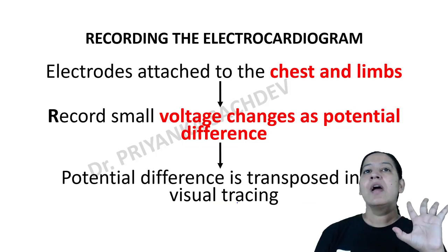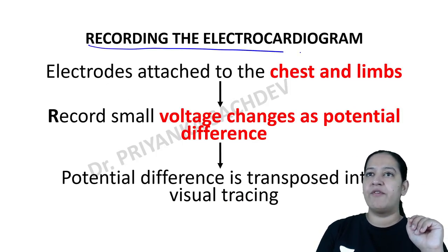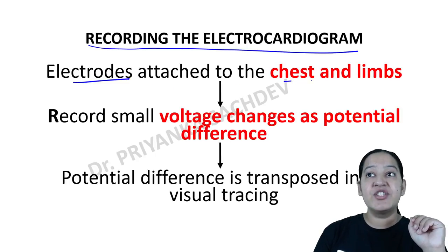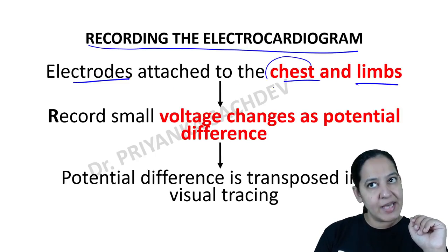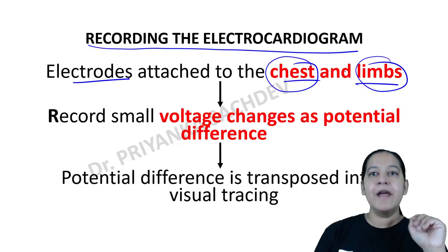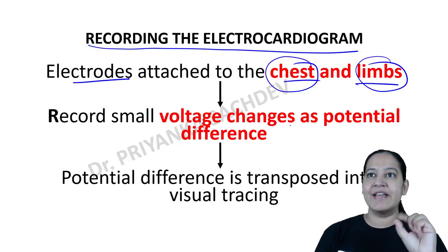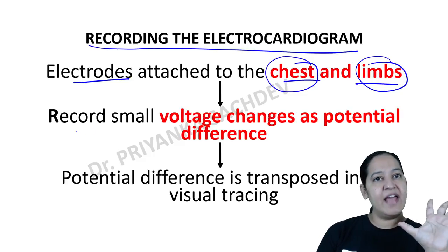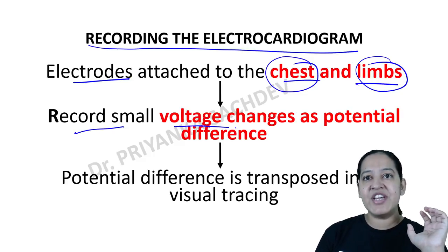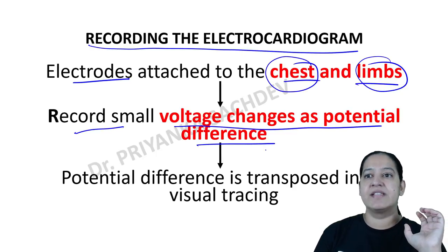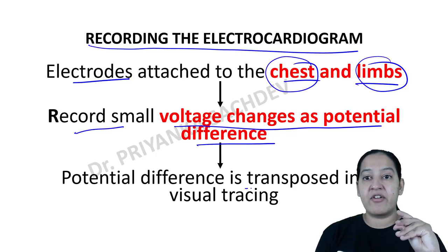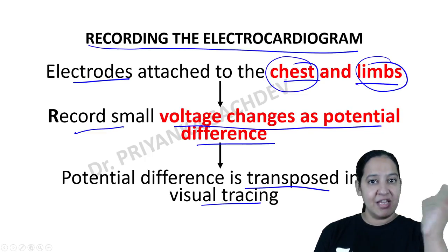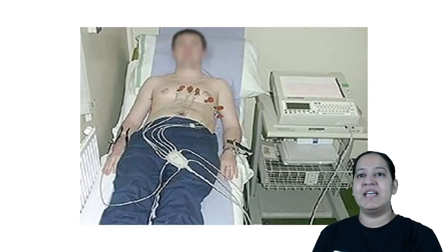For recording the electrocardiograph, we take the electrodes and attach them on the chest and the limbs. Six electrodes are placed on the chest and four on the limbs. There should be good contact between electrode and skin, so we use jelly. We record small voltage changes as potential difference, and these changes are transposed as visual tracing with a pencil on graph paper — that is known as ECG.